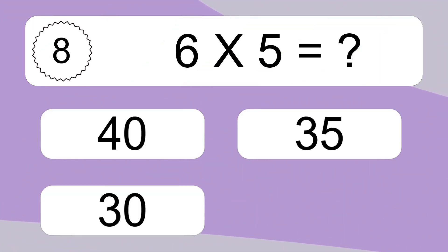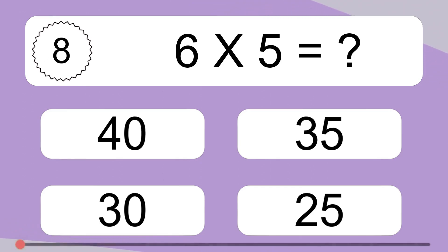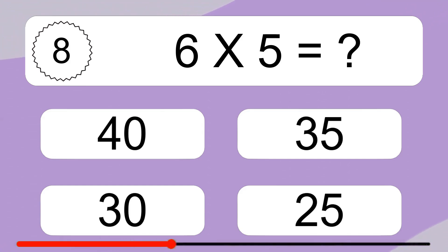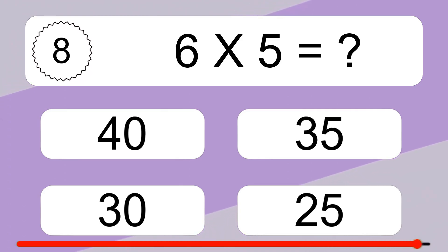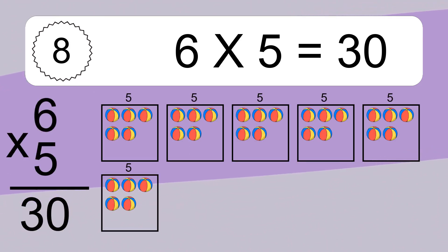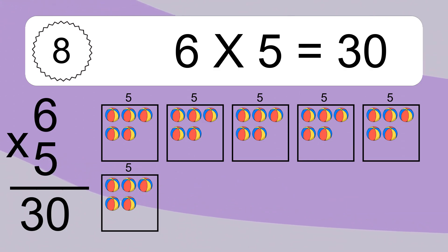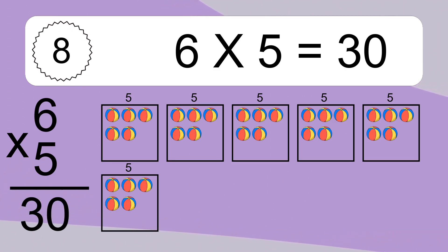6 times 5 equals what? 6 times 5 equals 30. We have 6 boxes, and each box has 5 colorful balls inside. If you count all the balls in all the boxes together, you will have 6 times 5 balls. This equals 30 balls.